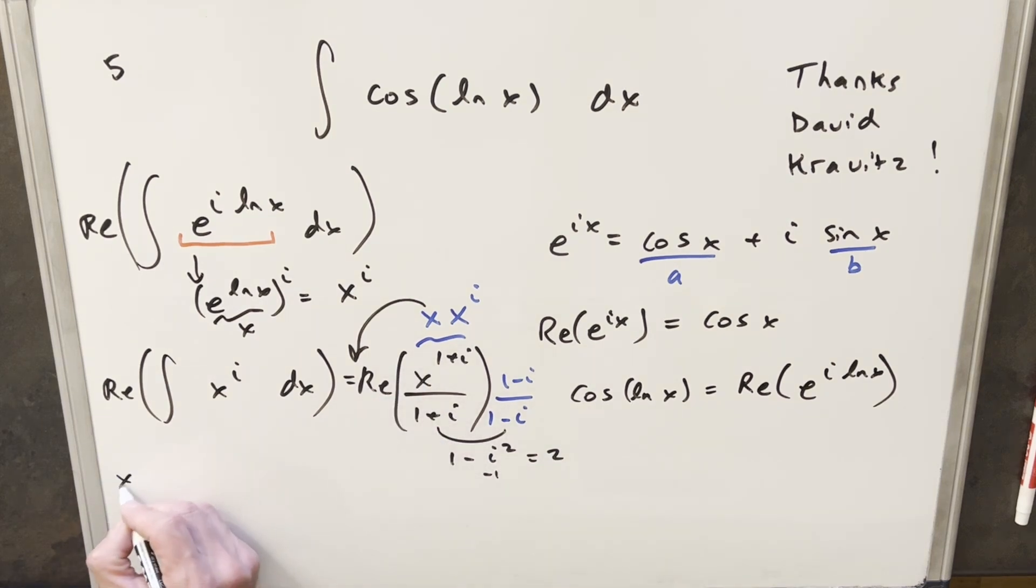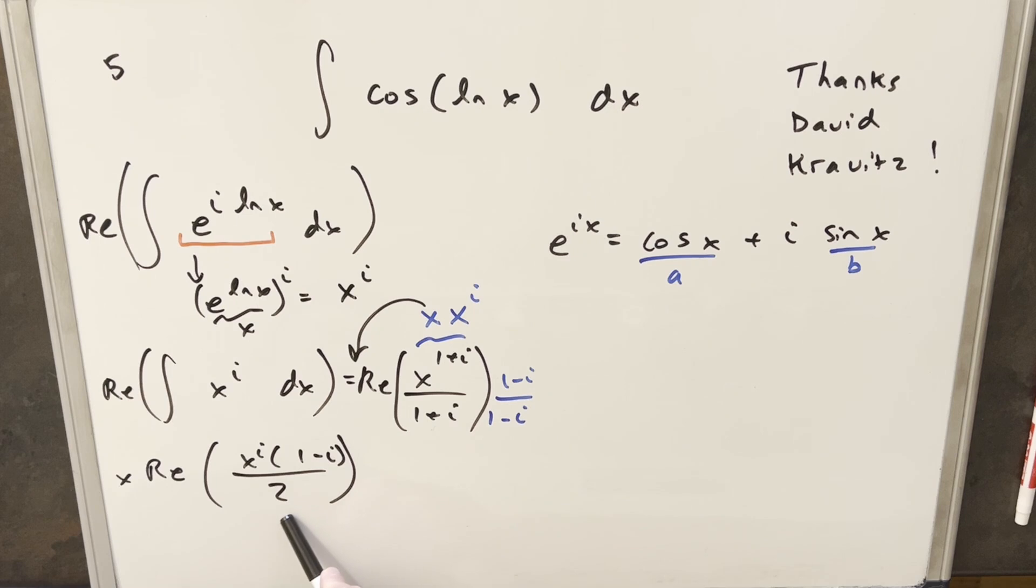So let me just rewrite this with the x in front now. So we have x, real part. And this is just going to become x to the i times 1 minus i all over 2. Now at this point, it's still not really clear what part of this is real and what part is imaginary. So we still have to do a little more work.